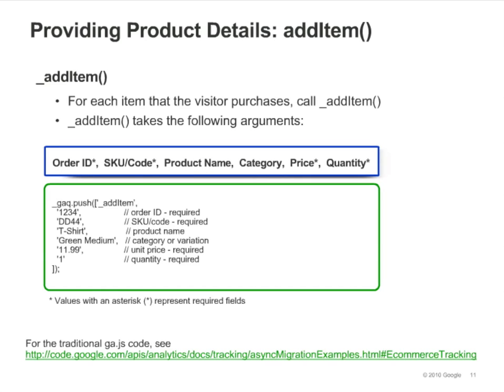For each item that a visitor purchases, call AddItem. If more than one item is purchased, you'll call AddItem multiple times. As with AddTrans, you can leave some of the fields blank, but note that order ID, SKU or code, price, and quantity are required arguments. Use the same order ID that you used in the call to AddTrans. If you're not sure how to write this code, contact your merchant software provider.